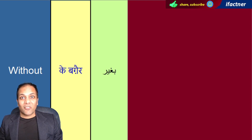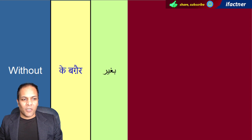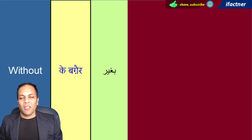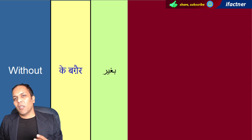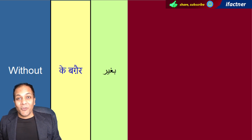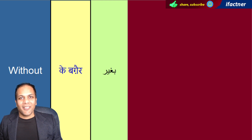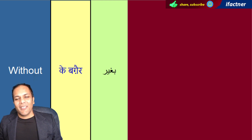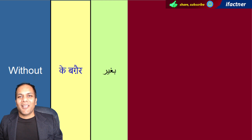Dostoon, aaj ka iFactner ka learning video tutorial mein, hum English ke word 'without' ke meaning ko achi tarikay se samjhenge. Word 'without' ko use kerte huay English mein teen ya chaar sentences banaenge aur un sentences ki translation karenge Urdu aur Hindi mein. Tutorial ghaur se suniye, kyunki aakhir mein hai ek chhoti si exercise. Toh shuru kertein hain aaj ka iFactner ka learning video tutorial.